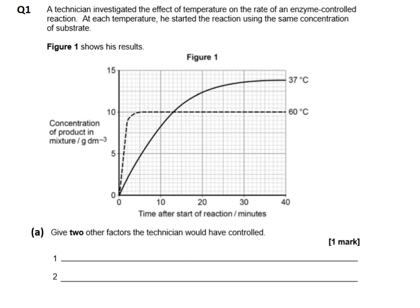When we approach any question, it's important to highlight some of the key parts. You might do that with a highlighter pen and then annotate some notes around the data or the question itself to help formulate ideas about what's being asked. If you look at the question, it says a technician investigated the effect of temperature on the rate of an enzyme controlled reaction. So we know it's a question about enzyme reaction rate and the independent variable is temperature.